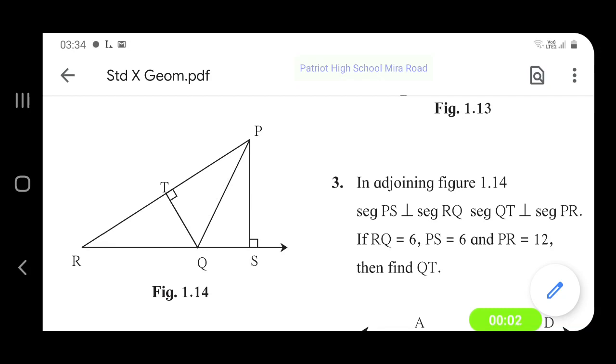In adjoining figure 1.14, segment PS is perpendicular to RQ and segment QT is perpendicular to segment PR. RQ is 6, PS is 6, and PR is 12.